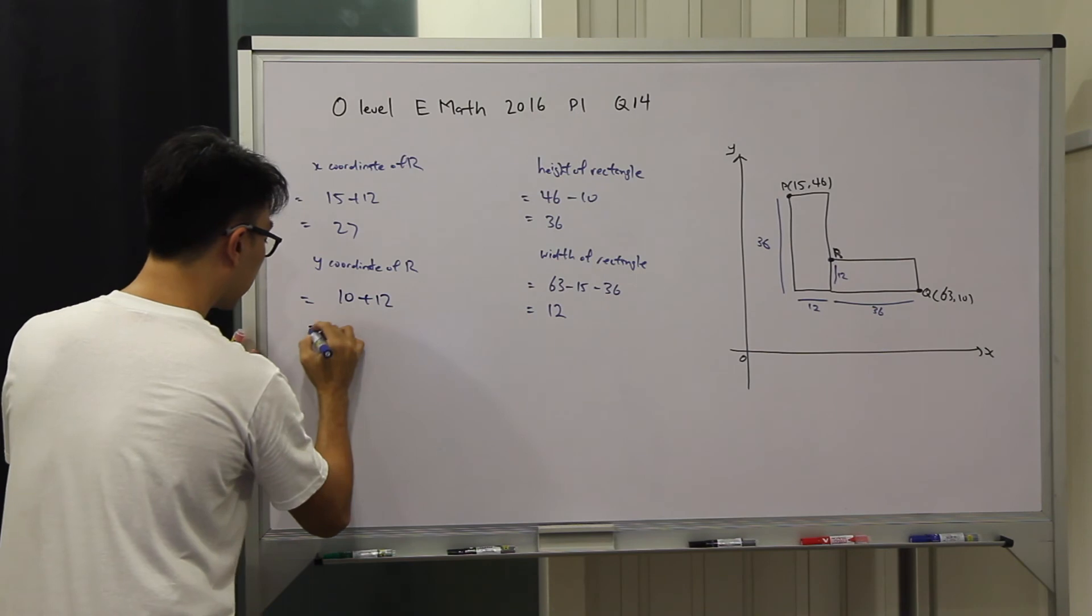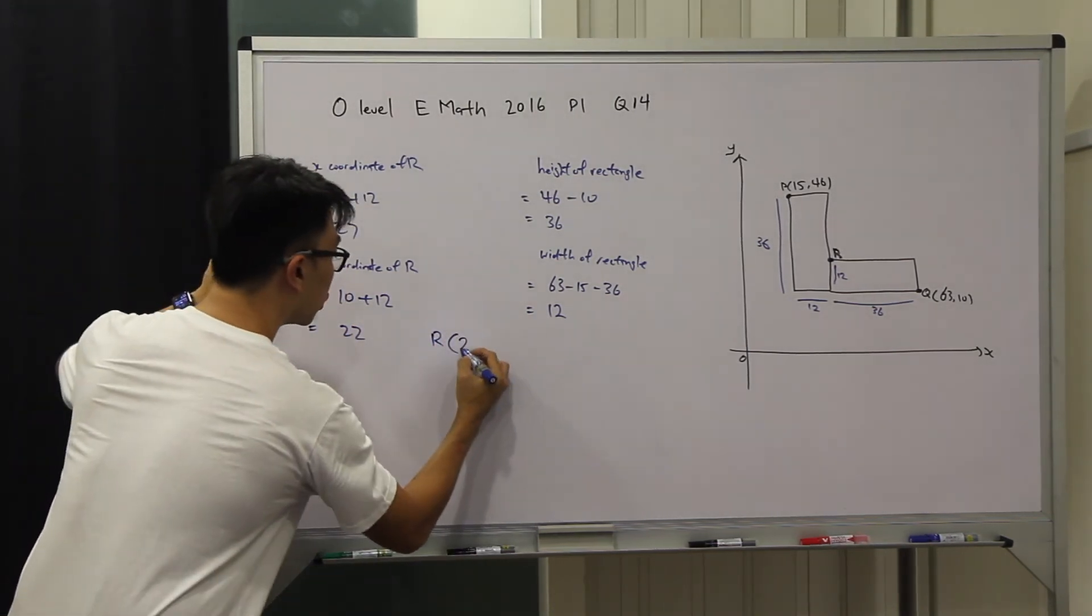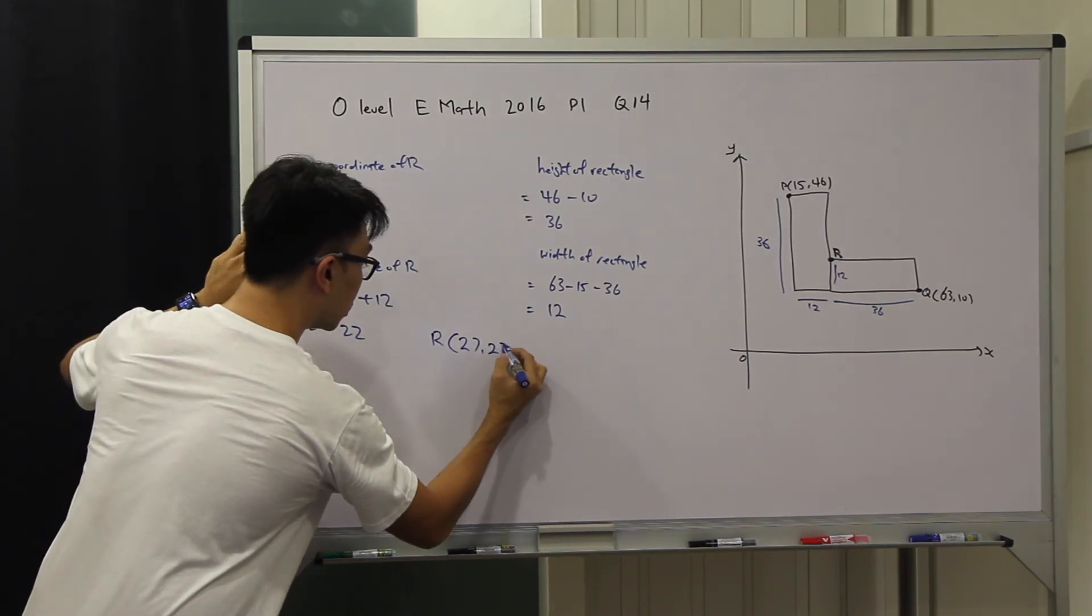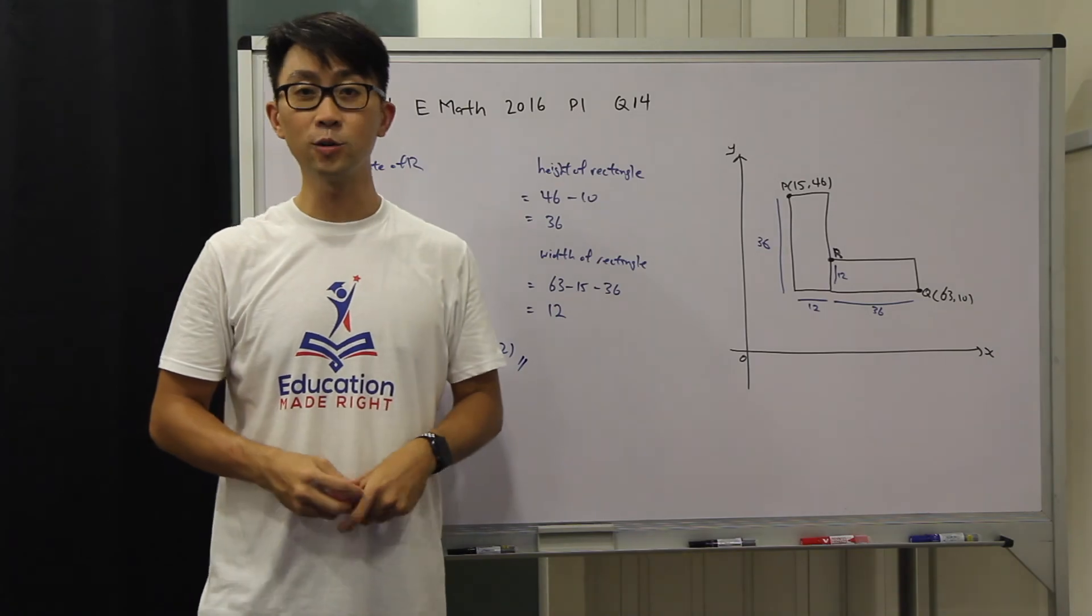That will give us 22. So R has coordinates (27, 22). This will be the answer for the question.